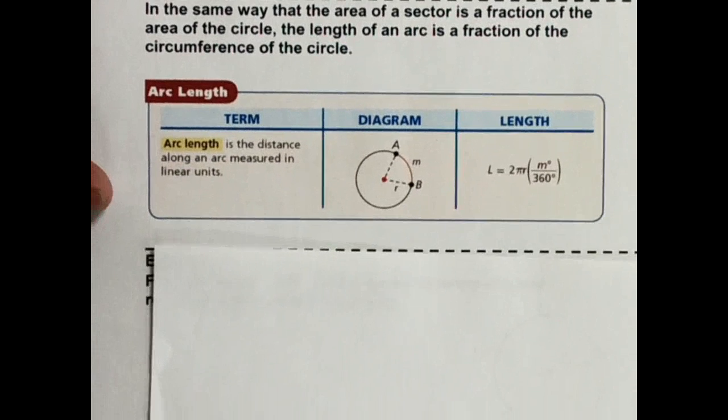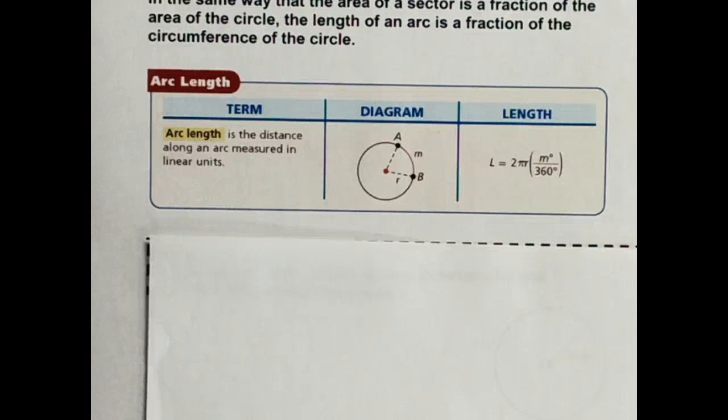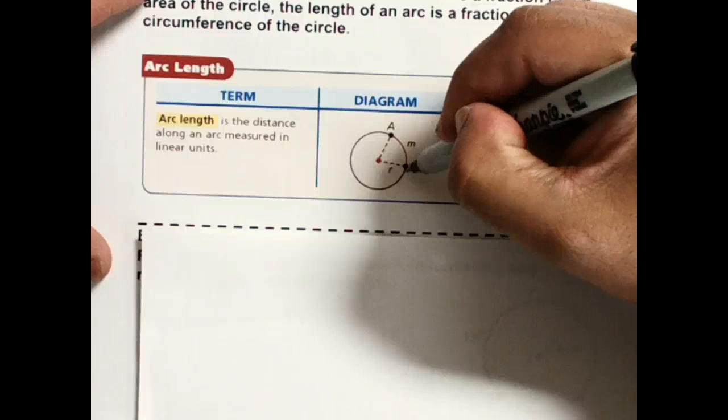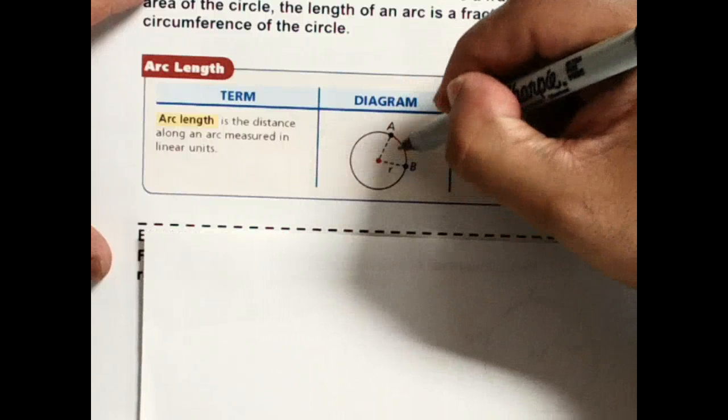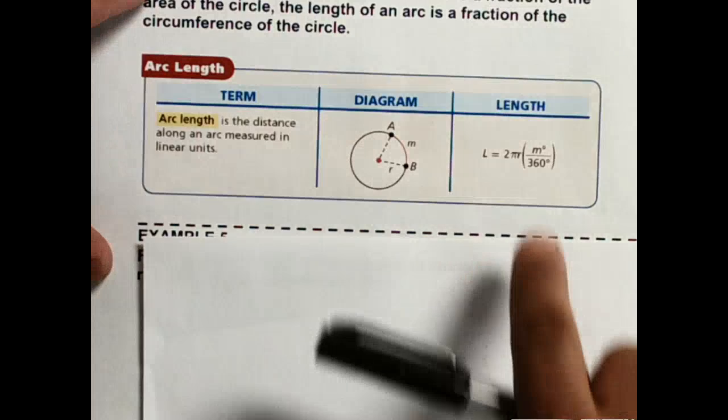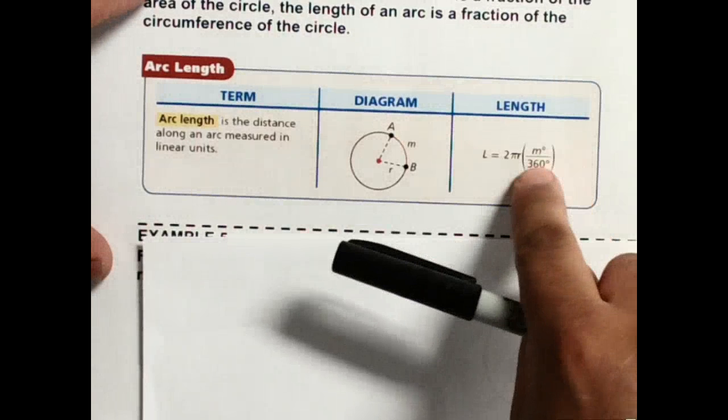We're going to look at the area of a sector. That's a fraction of the area of the circle. The length of an arc is a fraction of the circumference. So really, I just want the length of this part of the curve. So if I go all the way around that circumference, I just want a piece of that circumference. So we're going to do the same thing. We take the angle over 360, and then we times that with the circumference formula.